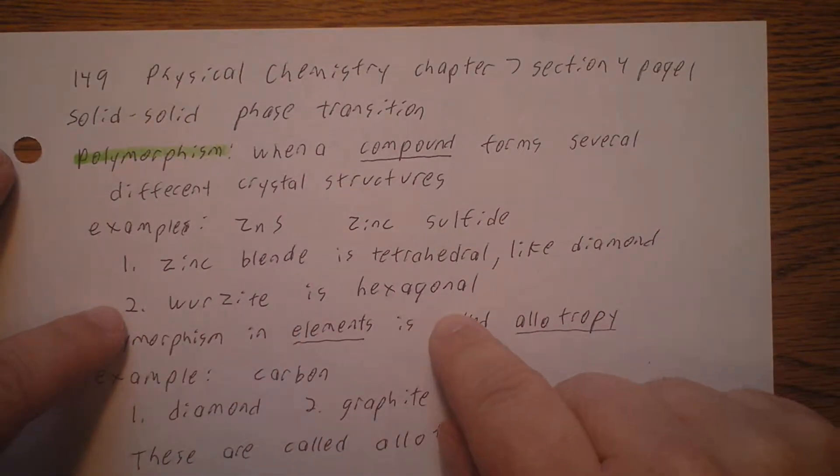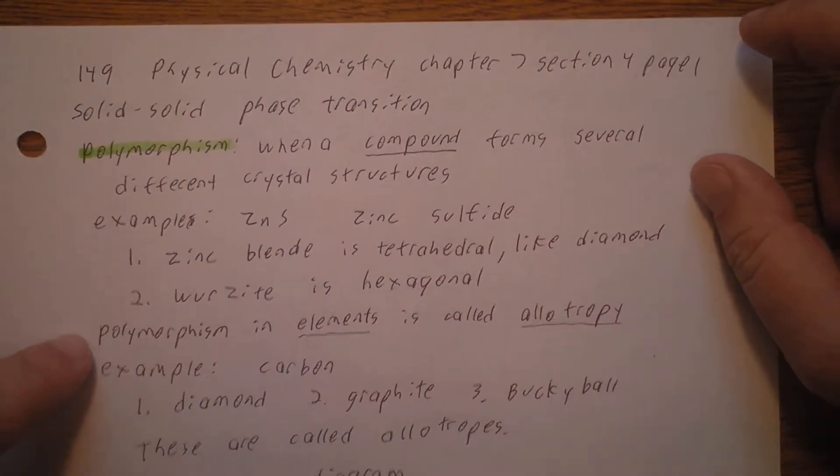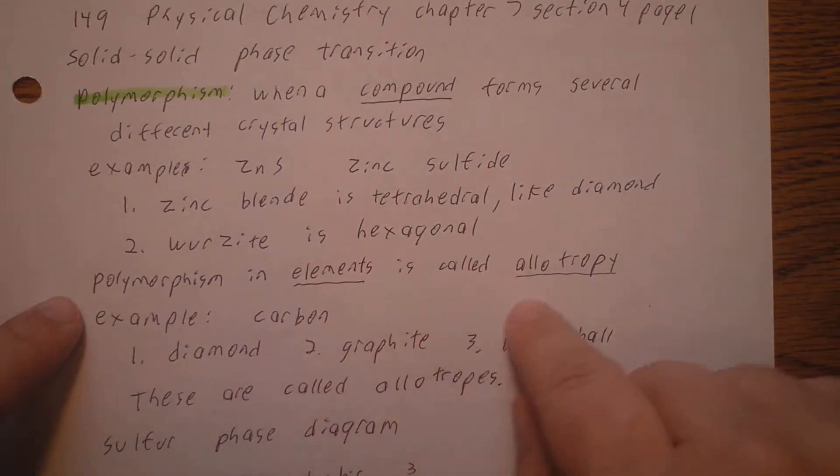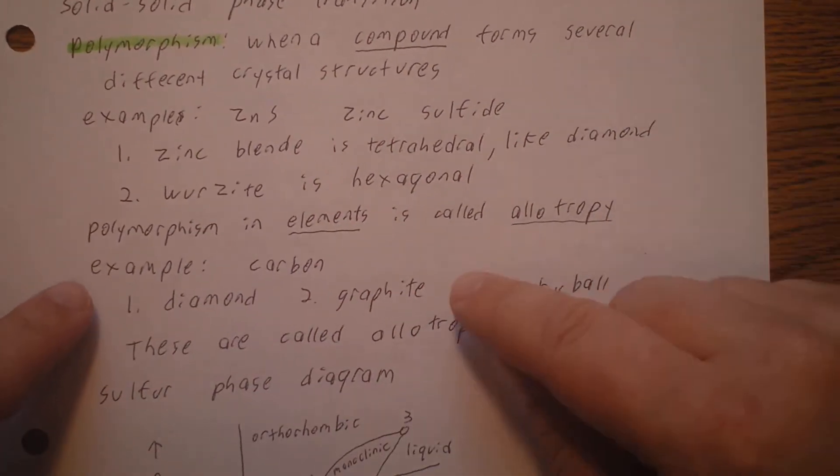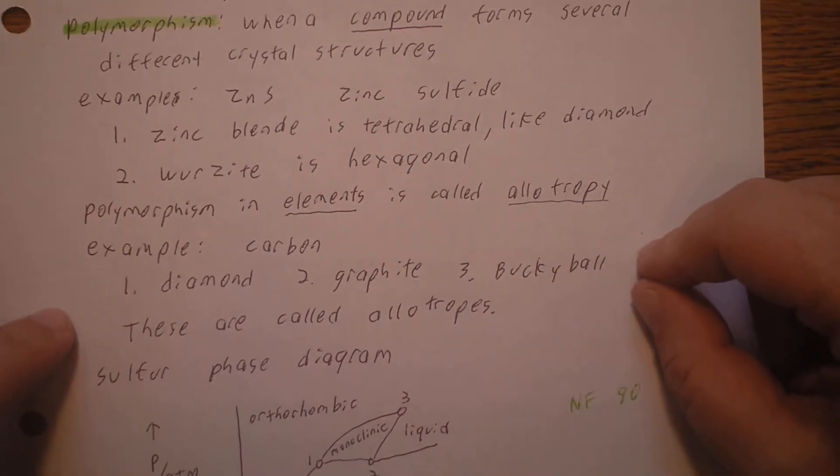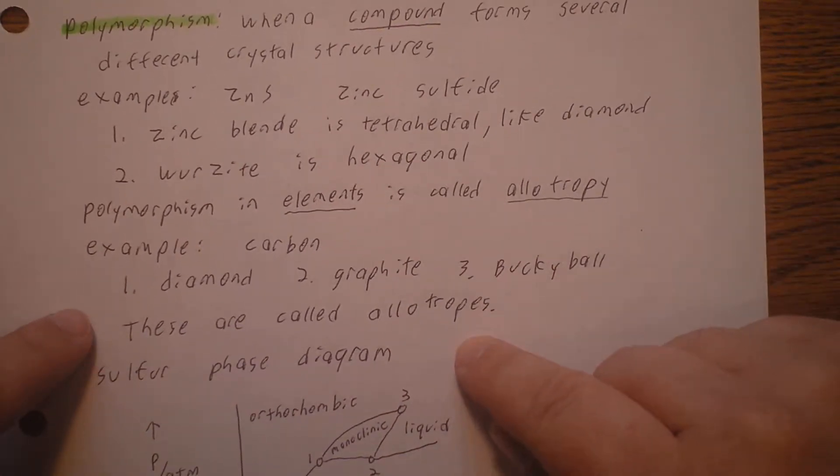The equivalent of polymorphism in elements is called allotropy. For example, carbon. It can be either diamond or graphite or buckyballs. These are called allotropes.